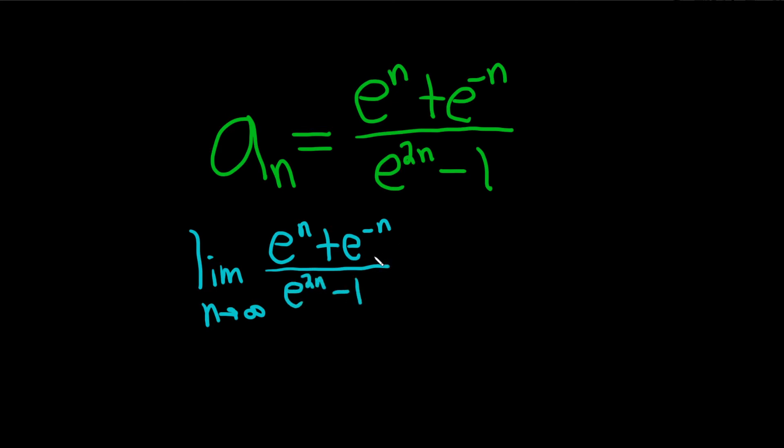And if we get a number, then we say the sequence converges. If we don't get a number, then we say the sequence diverges.